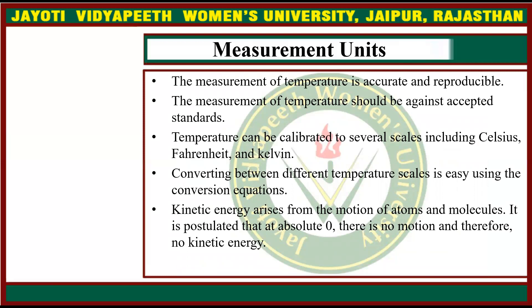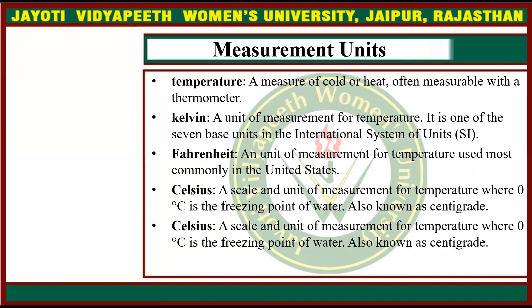The measurement of temperature is accurate and reproducible, and should be against accepted standards. Temperature can be calibrated to several scales including Celsius, Fahrenheit, and Kelvin. Converting between different temperature scales is easy using conversion equations. Kinetic energy arises from the motion of atoms and molecules. It is postulated that at absolute zero there is no motion and therefore no kinetic energy.